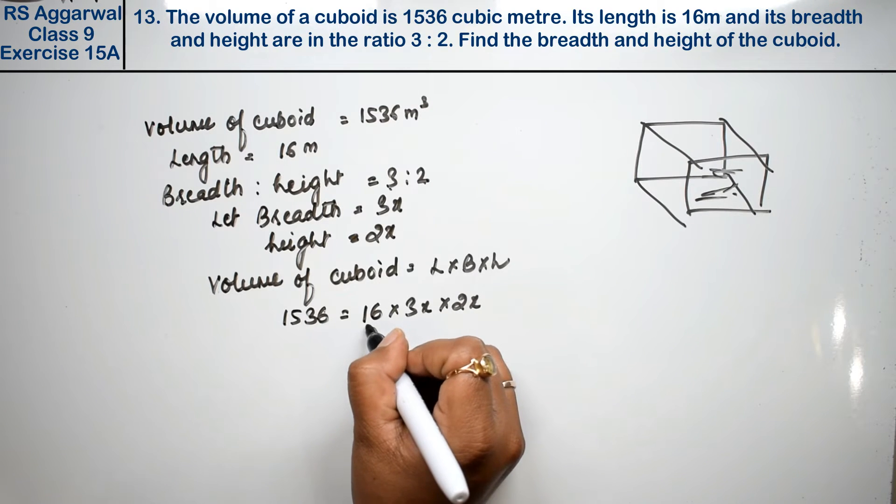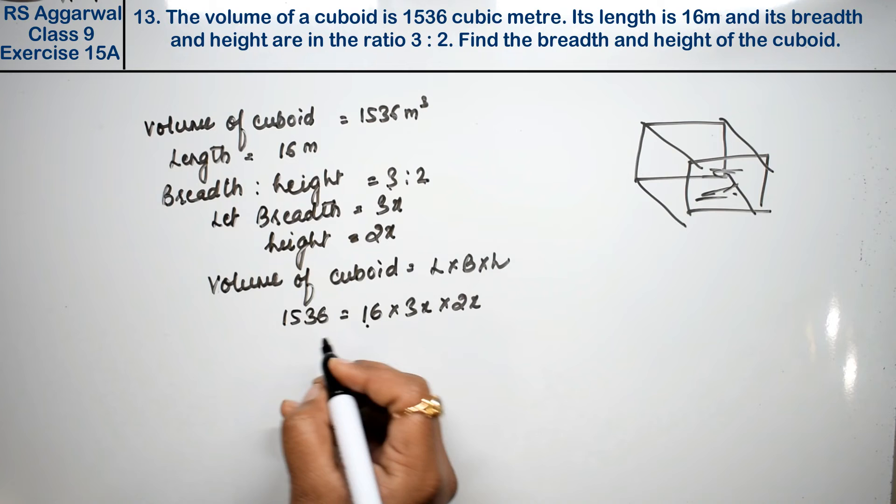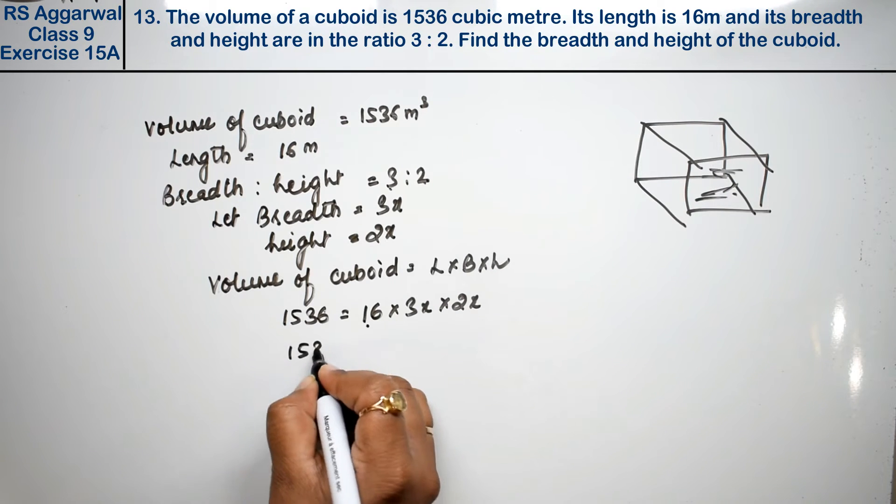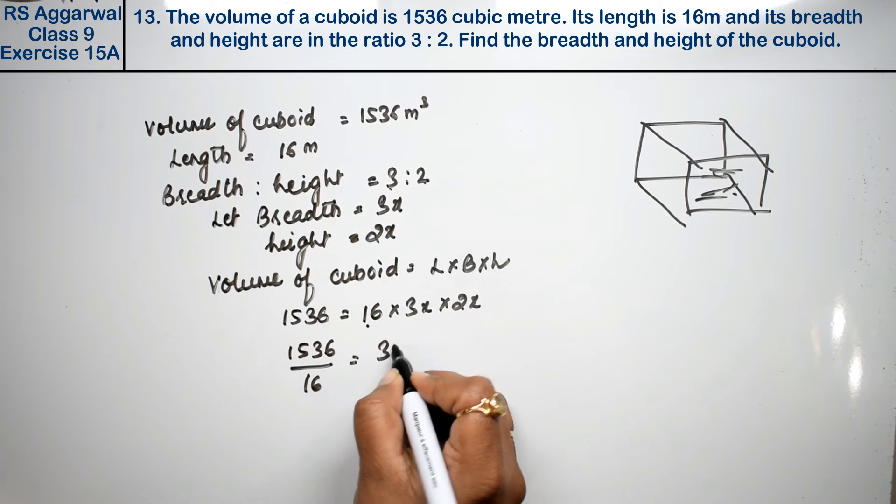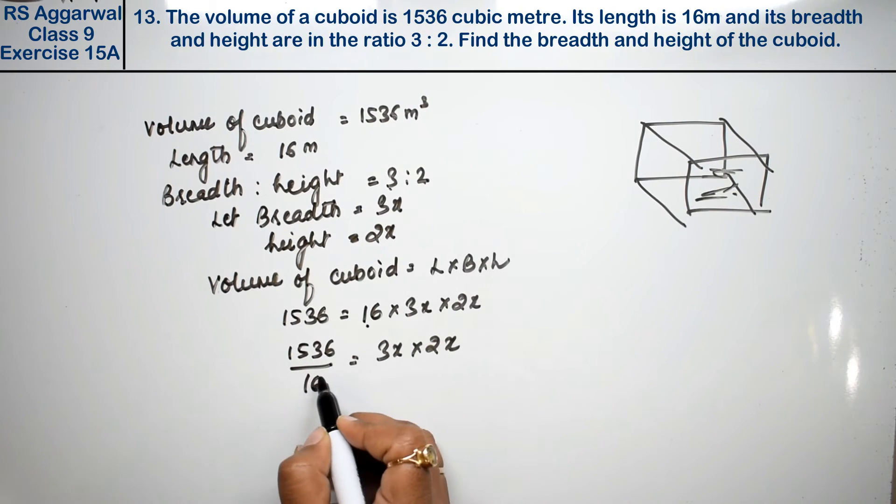Now, this will be divided here. 1536 divided by 16 equals 3x into 2x.